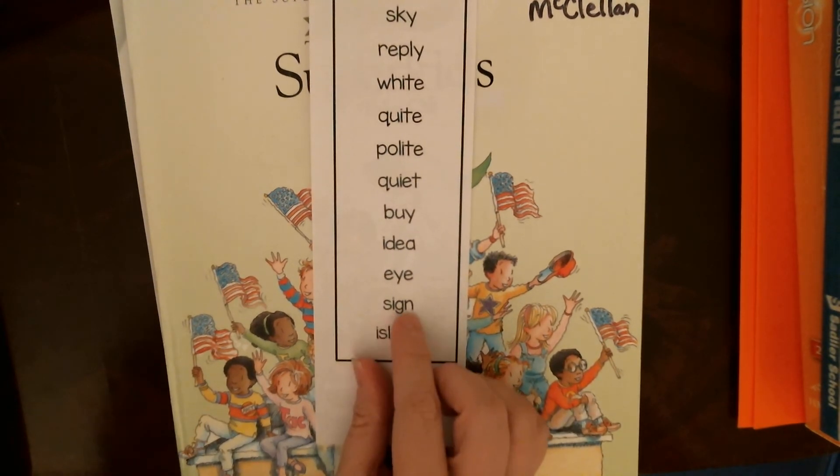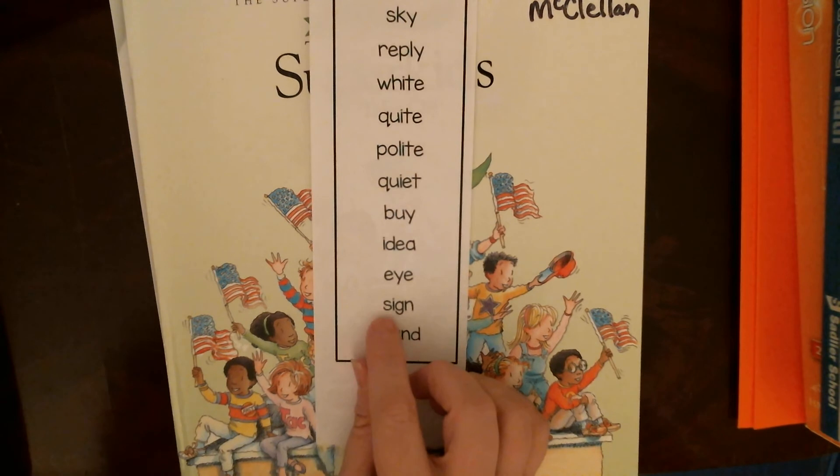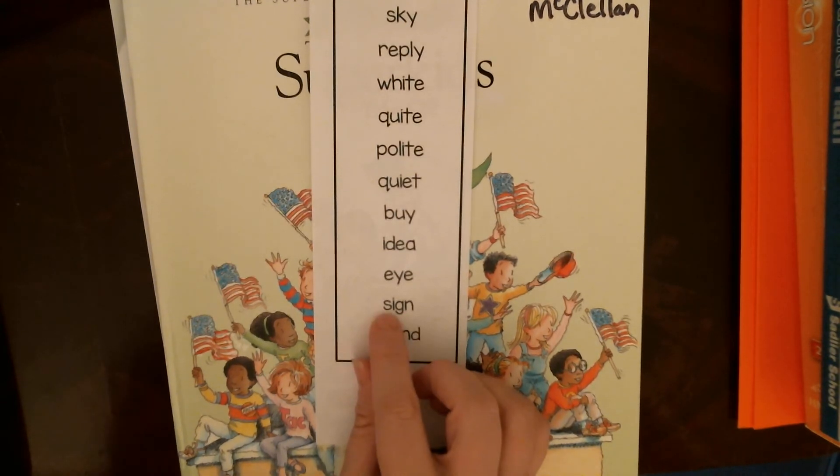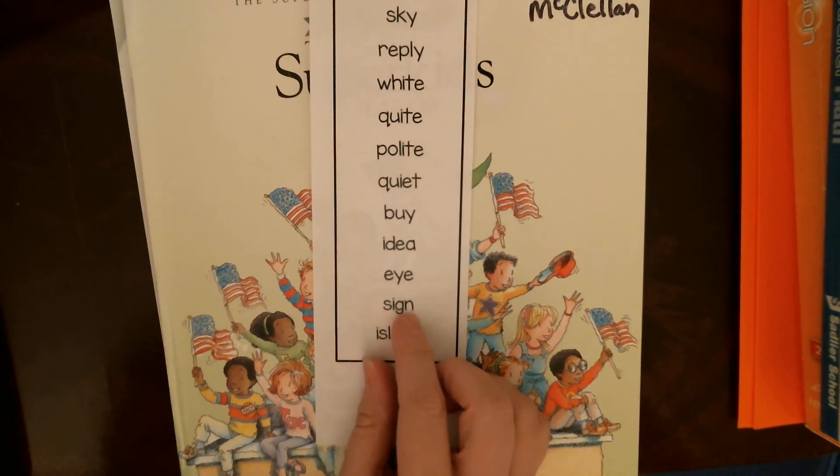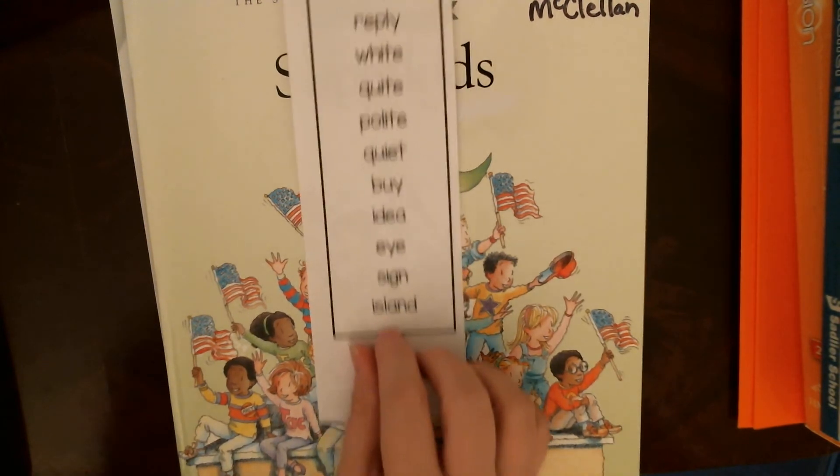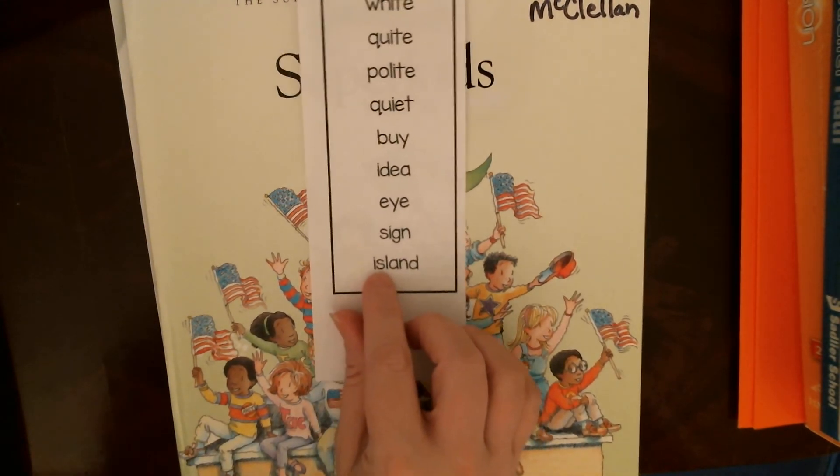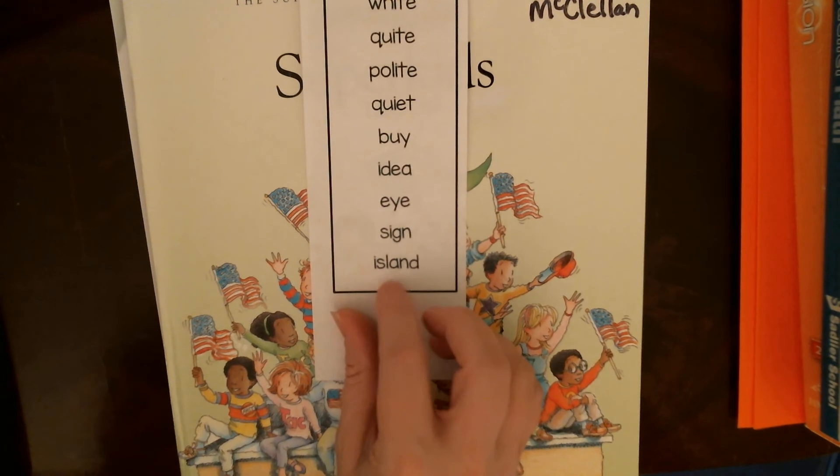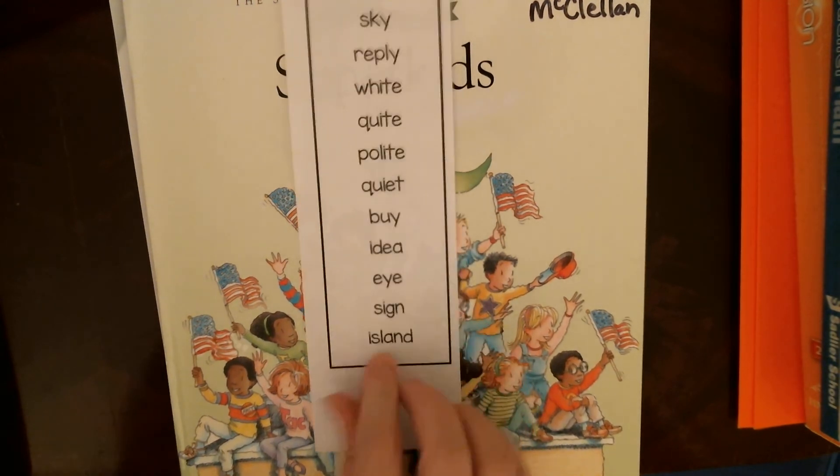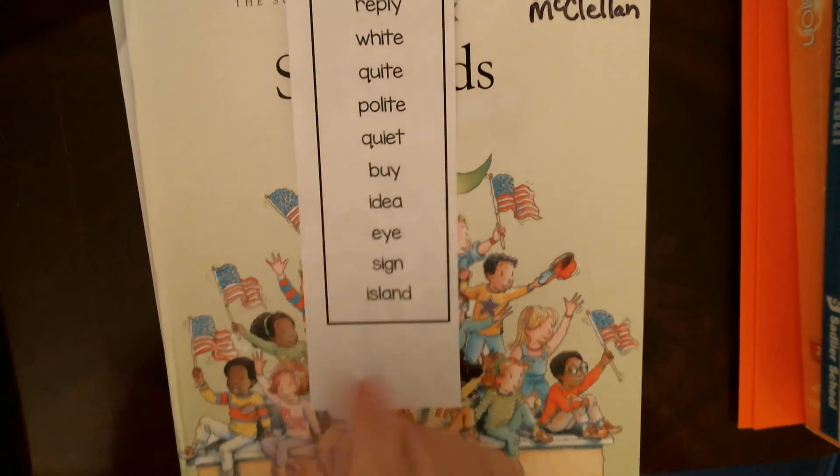This is the word sign. Remember earlier in the year, we learned IGH makes that long I sound. Well, when we see IGN, it's going to say ein. So this is sign. You might see a sign on the side of the road or you might sign your name on a paper.